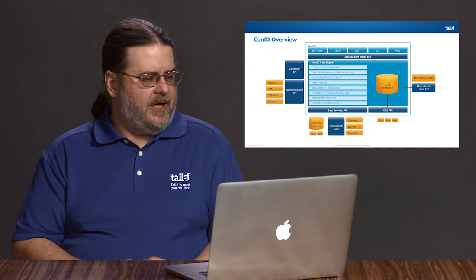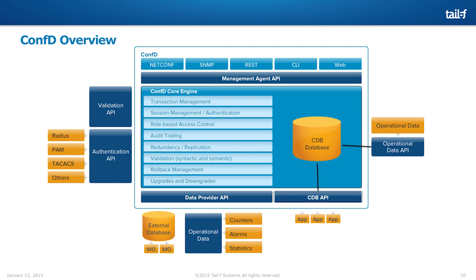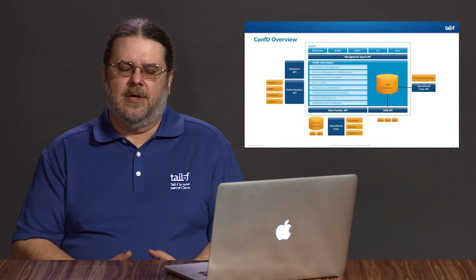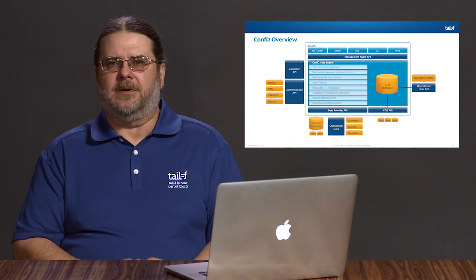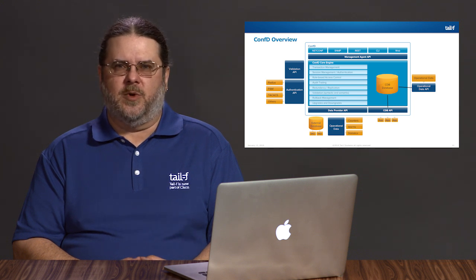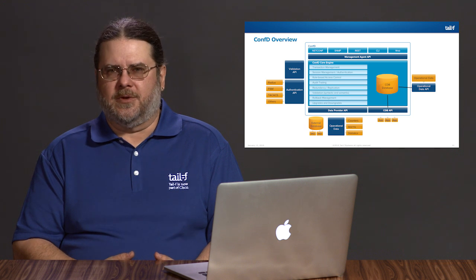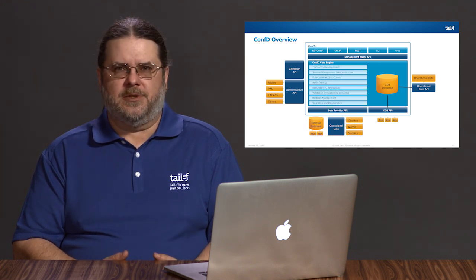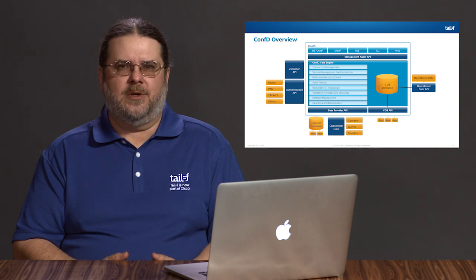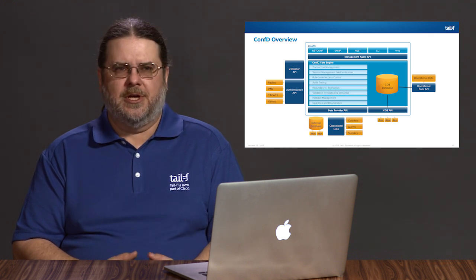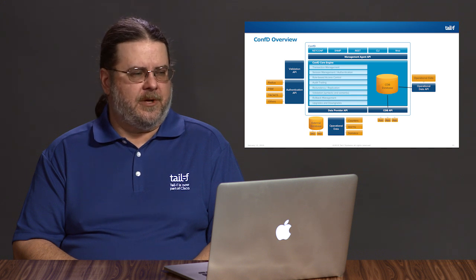An important part of the transaction-based system is rollback management. Sometimes you may have been reconfiguring the system but you need to revert, undo transactions, revert your configuration to a previous point in time. ConfD provides that rollback support. One nice thing about ConfD is that your instrumentation code does not need to know it's a rollback — all they see is a transactional configuration change. The rollback implementation in ConfD takes the rollback information, populates a new transaction, and that transaction can be edited or committed.